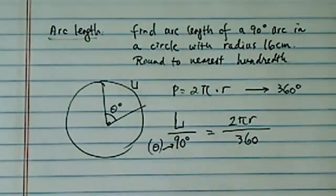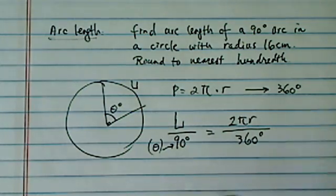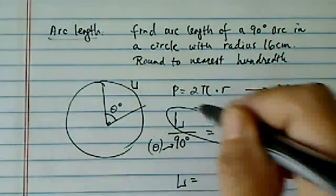Now in our case it's really easy because 90 is a quarter of 360 degrees, but let's walk through it and see what we can use to find a general case.